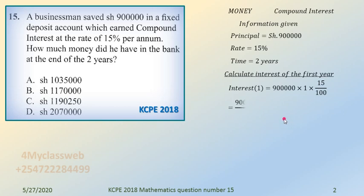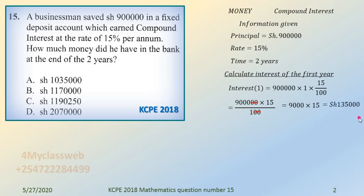You take 900,000 multiplied by 15 over 100. Deal with the zeros in the normal way and you are left with 9,000 multiplied by 15, which gives you the first interest of 135,000 shillings. This is the interest for the first year.